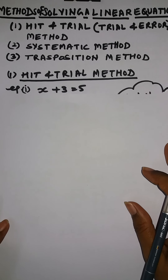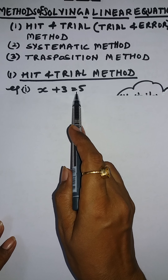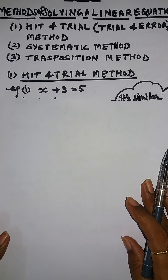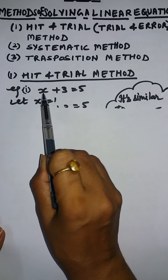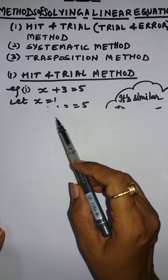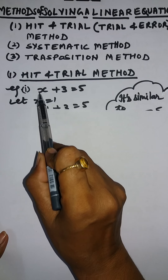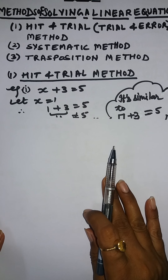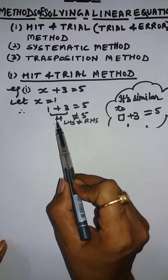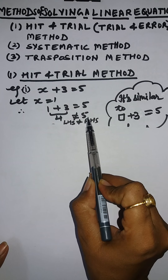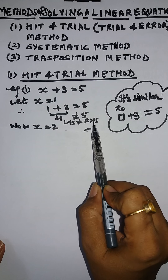Let us take an example: x plus 3 is equal to 5. We have to replace the variable x by different values. We take x equal to 1. Then 1 plus 3 equals 5, and we get 4 is equal to 5. But 4 is not equal to 5, so LHS is not equal to RHS.